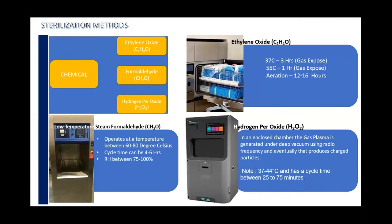When we talk about chemical sterilization, we have mainly three different types: ethylene oxide, formaldehyde, and hydrogen peroxide. I am referring to these as automated sterilization processes. Some may say sporicidal disinfectants can also be treated as a sterilization method, but I am talking about equipment wherein we use these chemicals for sterilization purposes.